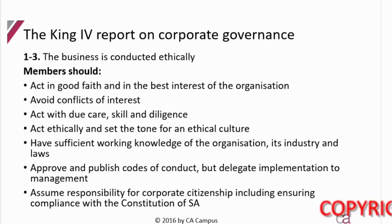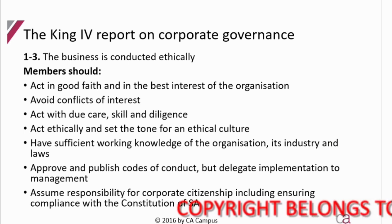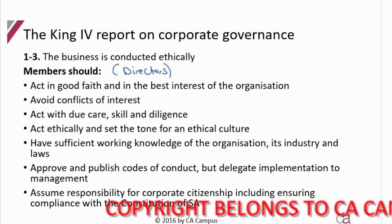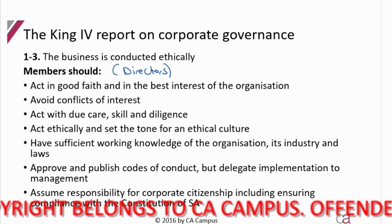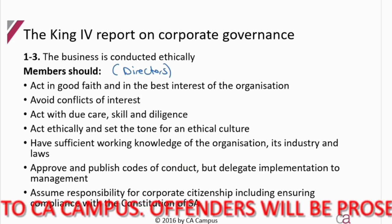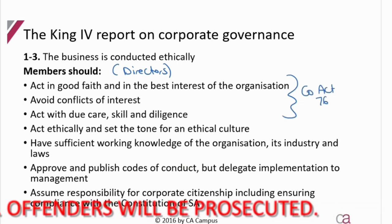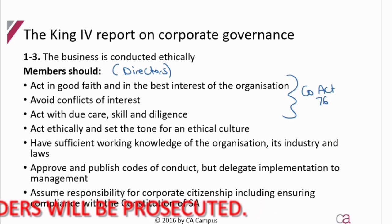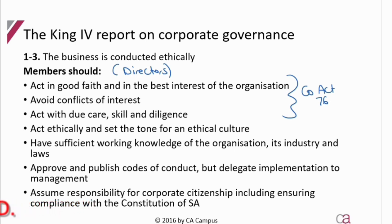Principles one, two, and three state that the business must be conducted ethically. The board members here would be directors, because when auditing a company you will be dealing with directors. Directors must act in good faith in the best interest of the organization, avoid conflicts of interest, and act with due care, skill and diligence. This comes directly out of the Companies Act section 76, and King has aligned what the board should do with what the Companies Act says directors should do.